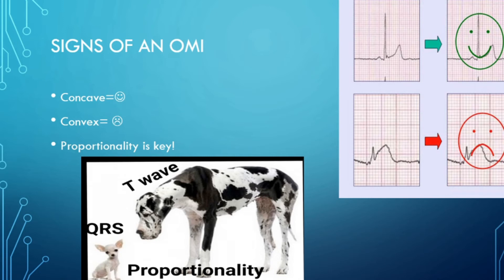If you follow the T wave with your finger, a normal T wave curves upward with a slow upslope and quick downslope — very asymmetric. That is your concave, happy-face T wave. Conversely, a convex T wave shoots right off the QRS complex at the J point and gives a dome effect — slow up and slow down. This is your convex morphology, the frowny face. You should be really sad when you see this.